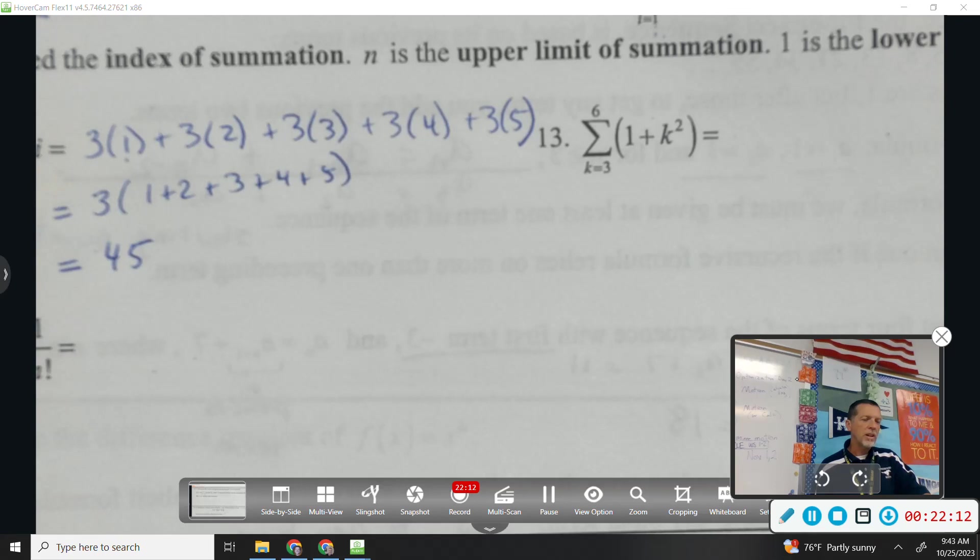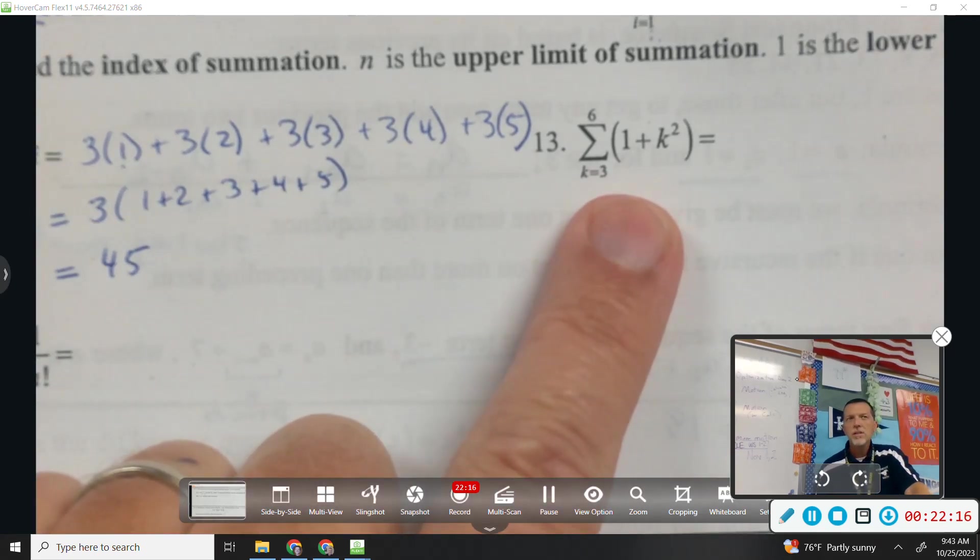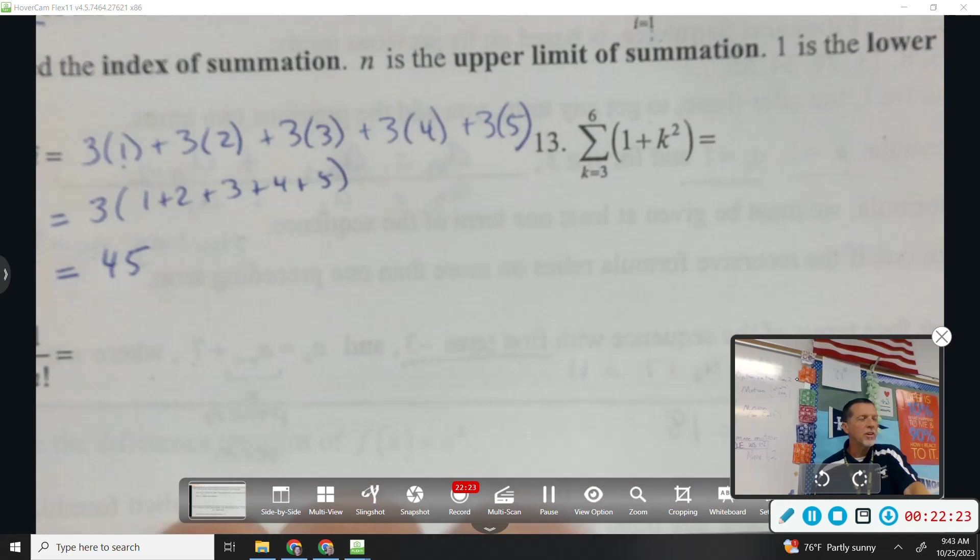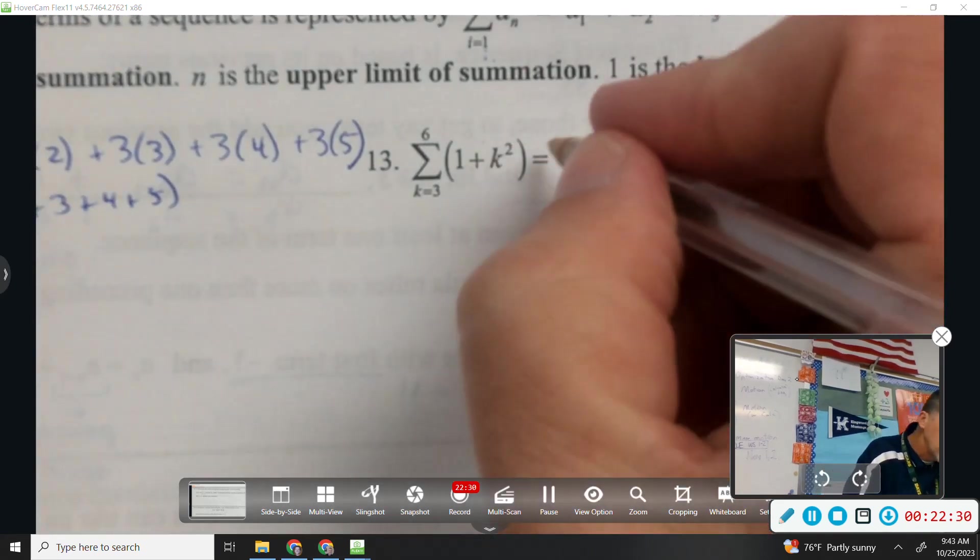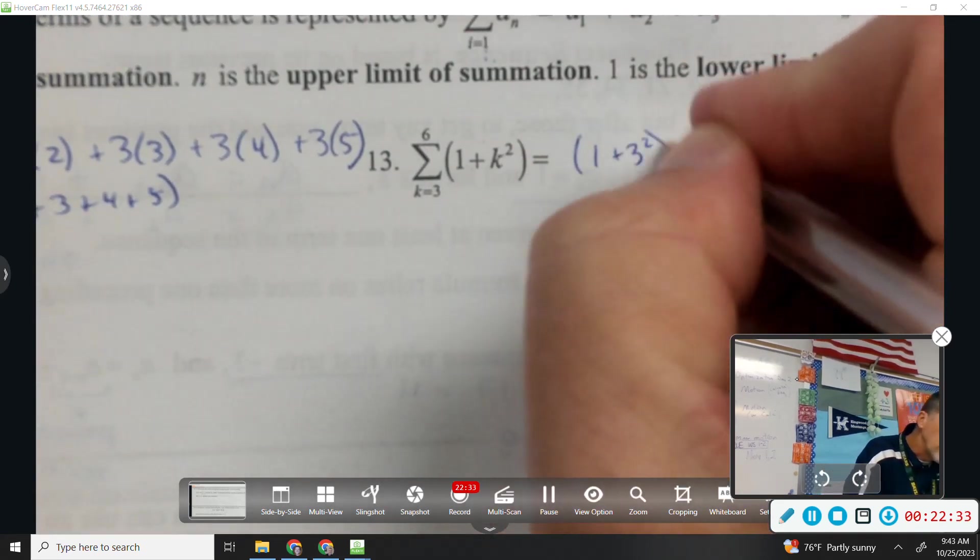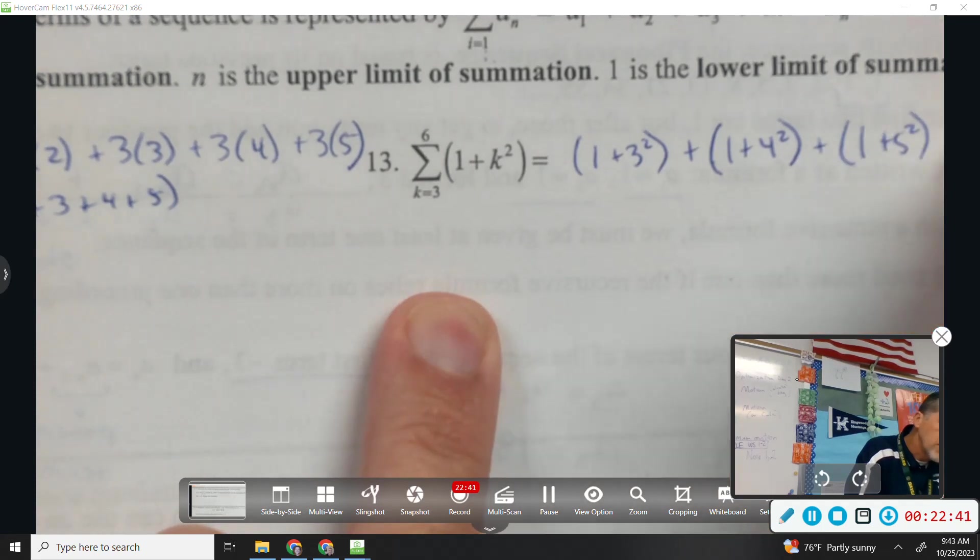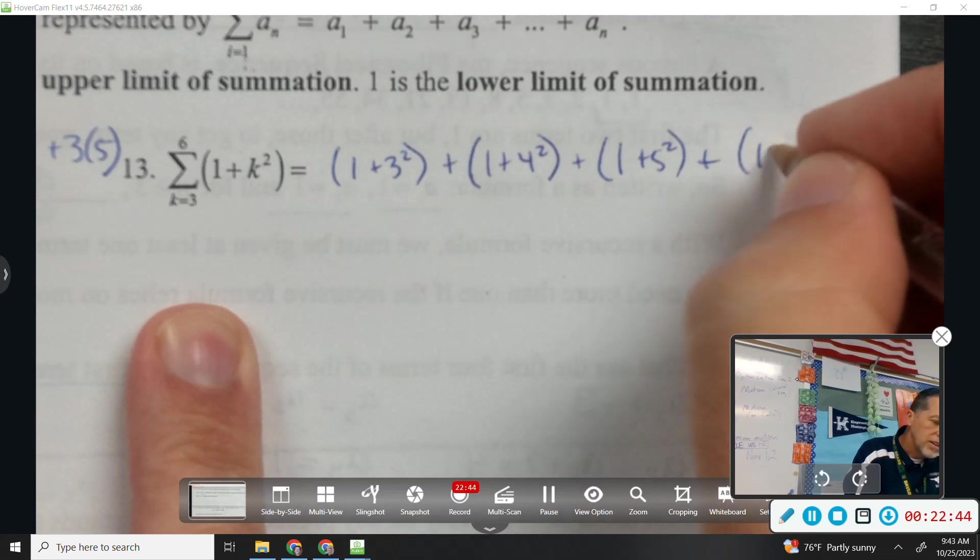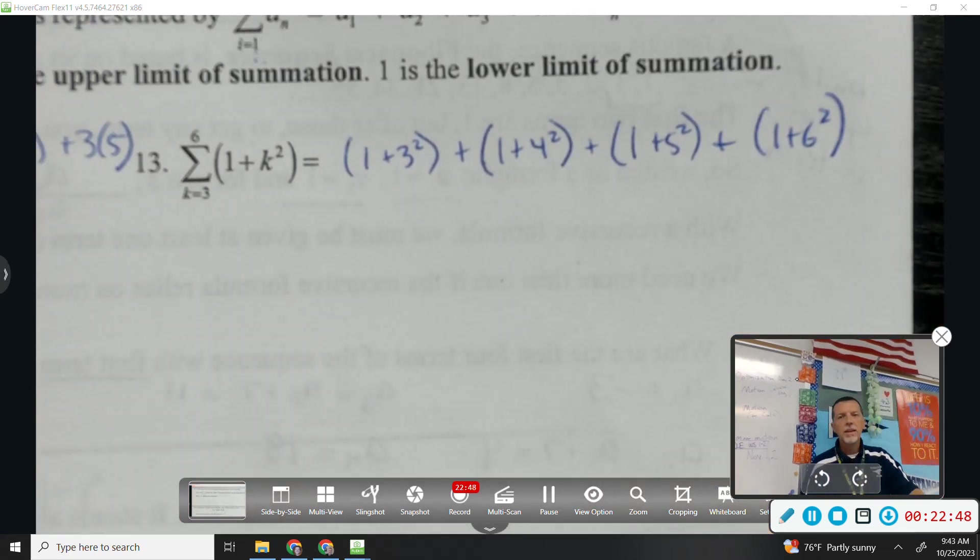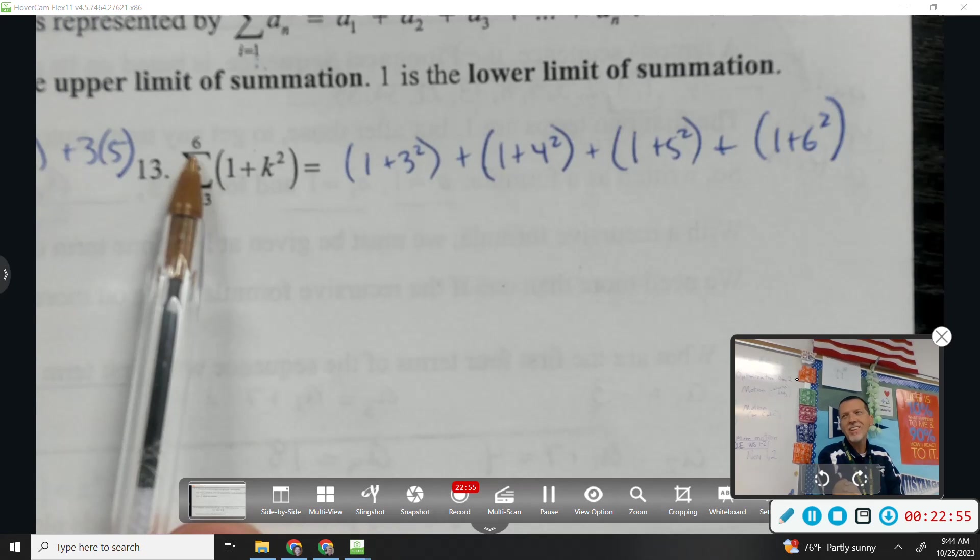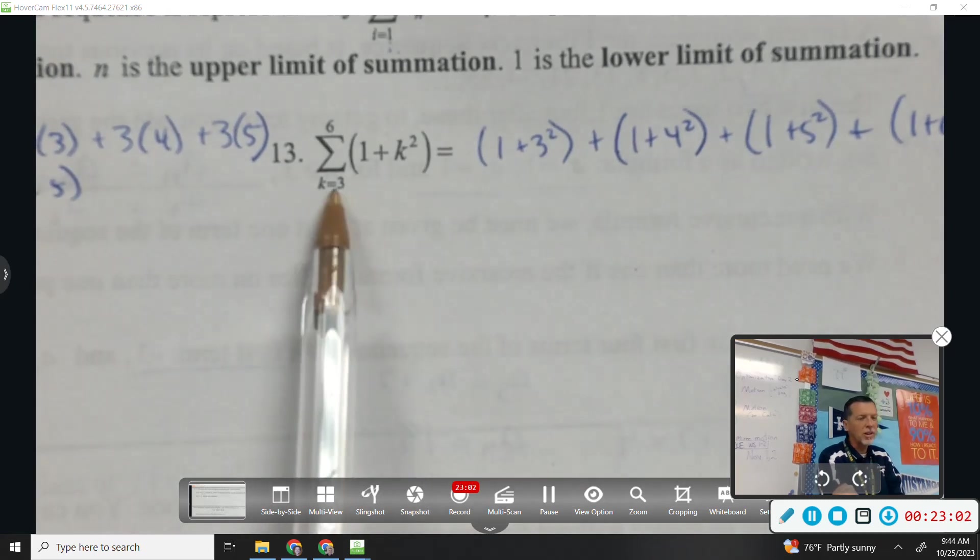What's weird about number 13, about this next one? It's got a squared. It's k rather than i, but it doesn't really matter what variable we use. Our starting number is 3, which is kind of weird to start with 3, but okay, we'll still start with 3. 1 plus 3 squared plus 1 plus 4 squared plus 1 plus 5 squared plus 1 plus 6 squared. And we stop at 6. So be careful. The top number is where you stop. It's not necessarily how many terms there are. I mean, if you start at 1, it's how many terms there are. But if you start at 3, it's not how many terms there are.